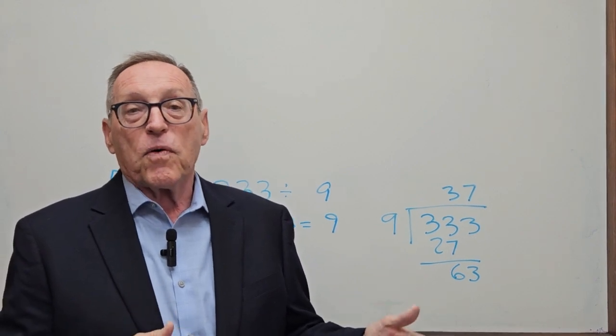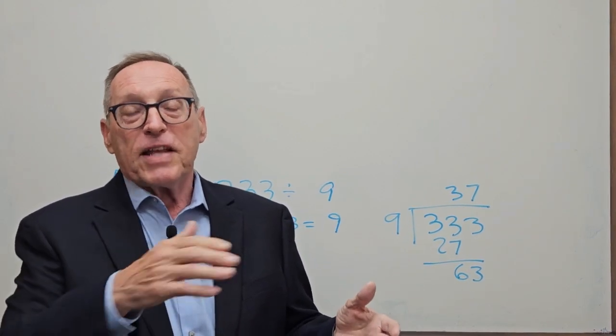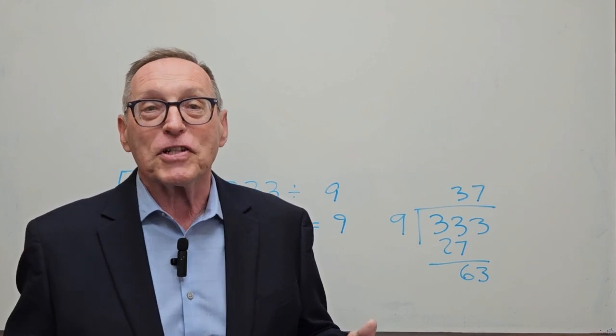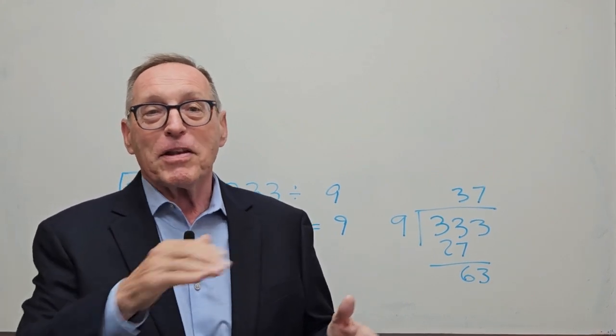8, 8, 8, you get 24. Divided into 888 is 37. I stuttered there, but got my numbers mixed up.